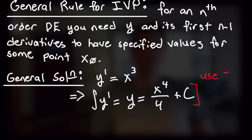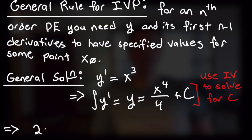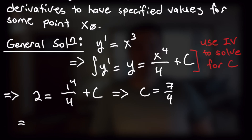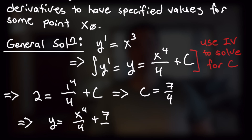Now we use our initial value to solve for the constant c. Substituting y(1) = 2, we have 2 equals 1 to the fourth over 4 plus c, which gives us c equals 7 over 4. So our solution for this initial value problem is y equals x to the fourth over 4 plus 7 over 4. And that is our final answer.